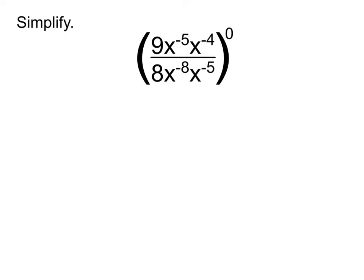If you did that, you'd go through all that work and you would end up getting 9x to the 4th over 8 all to the power of 0. And so you could go ahead and simplify everything through there first. Or you could start by dealing with the exponent first.